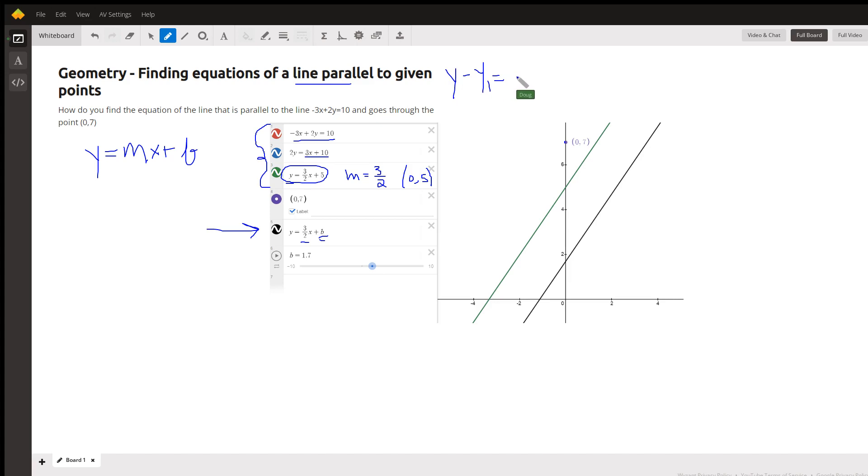Which is y minus y sub 1 equals m times x minus x sub 1, where x sub 1 comma y sub 1 are the x and y coordinates of the point that you want the line to pass through.